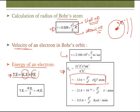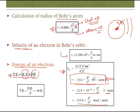Converting to joules gives En = −21.8×10⁻¹⁹ z²/n² joules per atom. Converting to calories gives En = −313.6 z²/n² kilocalories per mole. Generally questions are asked using these formulas, so remember them.